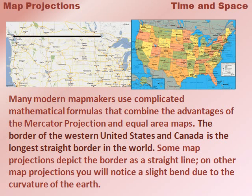The border of the western United States and Canada is the longest straight border in the world. Some map projections depict the border as a straight line, while on other map projections you will notice a slight bend due to the curvature of the Earth.